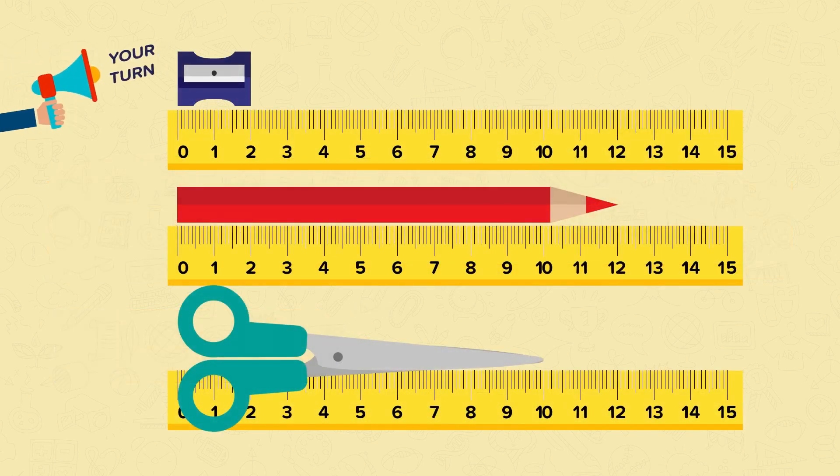Now it's your turn to measure these objects. Pause the video and write down your answers. Let's go through the answers now. The pencil sharpener is 2 centimetres long. The red crayon is 12 centimetres long. And the scissors are 10 centimetres long. Well done if you got them all correct.